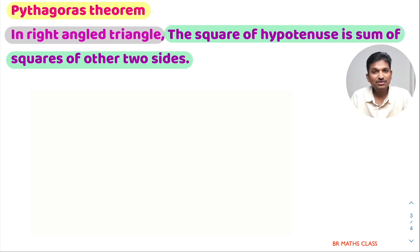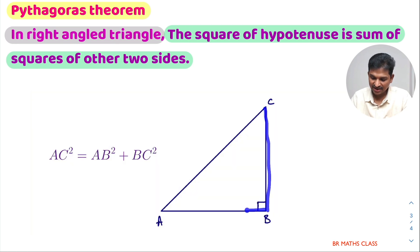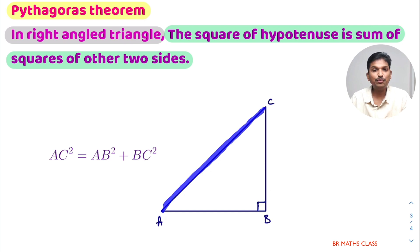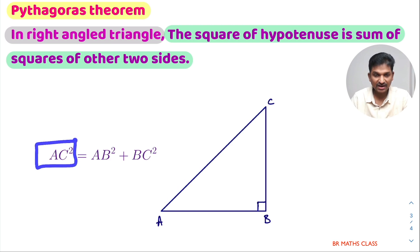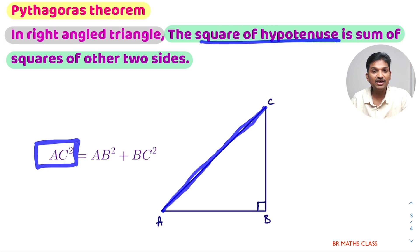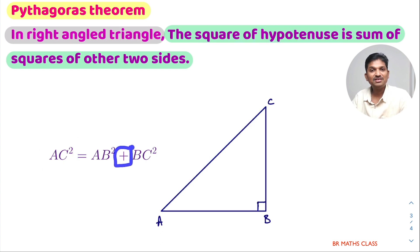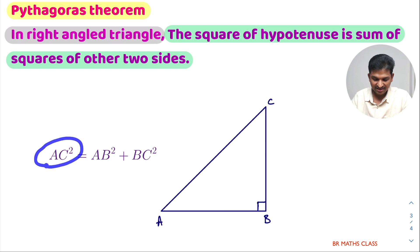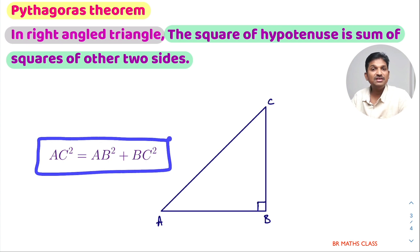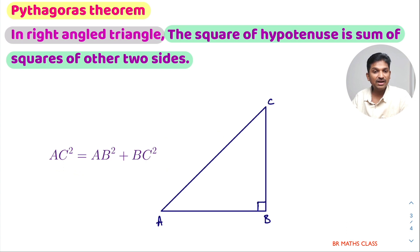I'll explain this with a right angle triangle. Here I have a right angle triangle — this is 90 degrees, and the side opposite to 90 degrees is the hypotenuse. AC is the hypotenuse. So AC square equals the sum of squares of the other two sides: AB and BC. Therefore, AC square equals AB square plus BC square. This is what we use very frequently in trigonometry.